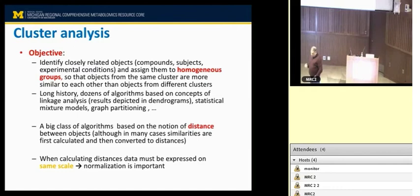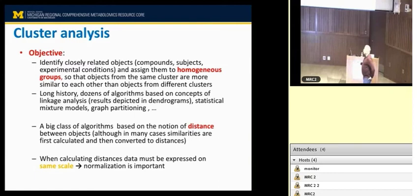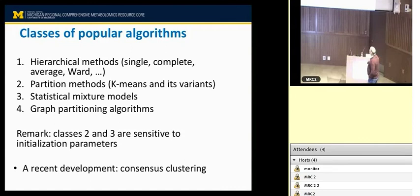If you don't take care of this technical issue, your cluster analysis results may be dominated by a few metabolites measured on the largest scales. That's why putting the data on the same scale — through a log2 transformation or a z-score transformation — is important. These transformations are available in MetaboAnalyst, which you'll go through tomorrow.